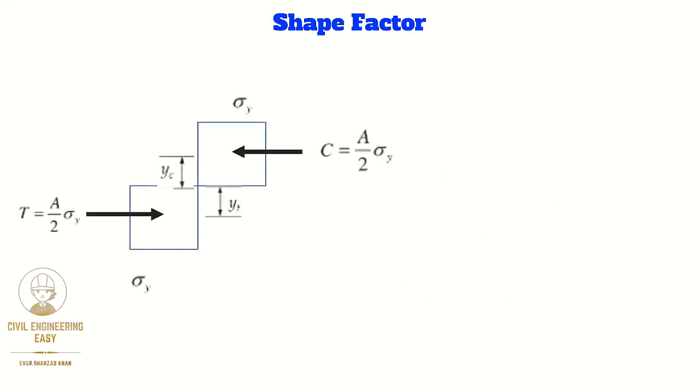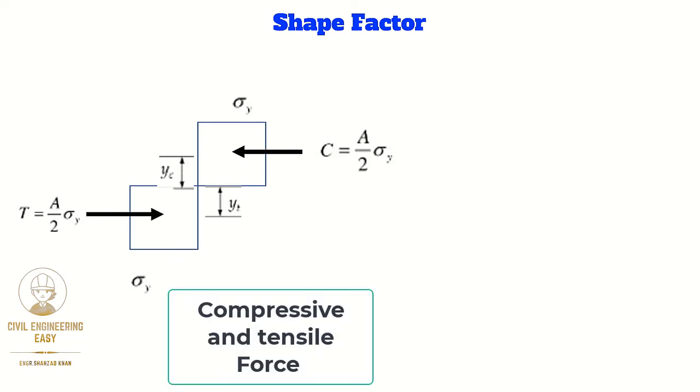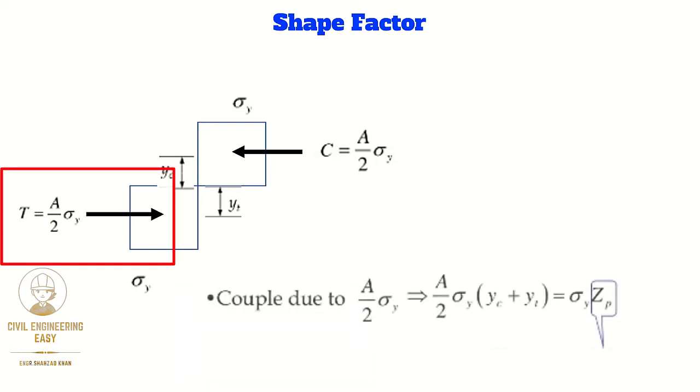These two forces produce a couple that will be equal to the magnitude of the force and their respective distance. The magnitude of force is Ay times sigma y, and the respective distance is yc plus yt. The Ay divided by 2 times (yc plus yt) is called the plastic modulus.